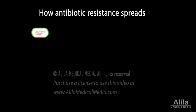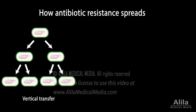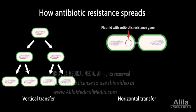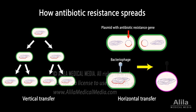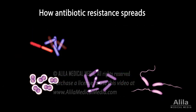Mutations that confer antibiotic resistance can be transmitted not only vertically, from parent cells to offspring, but also horizontally, from one bacterial cell to another, using mobile genetic elements such as plasmids or bacteriophages. This means a bacterial strain can share their antibiotic resistance with other bacterial strains, and even with distantly related bacterial species. Horizontal transfer is a major mechanism underlying the spread of antibiotic resistance among bacterial species.